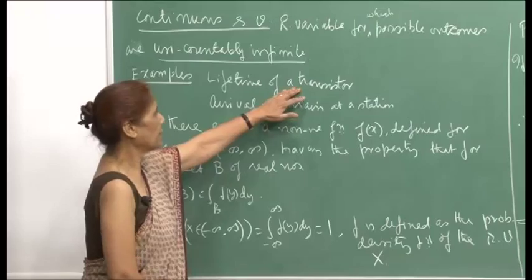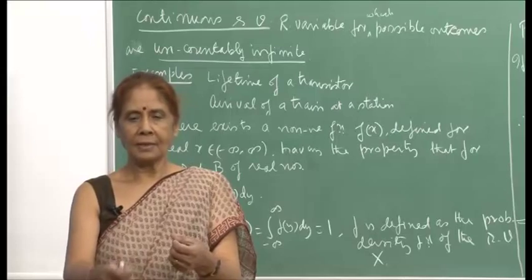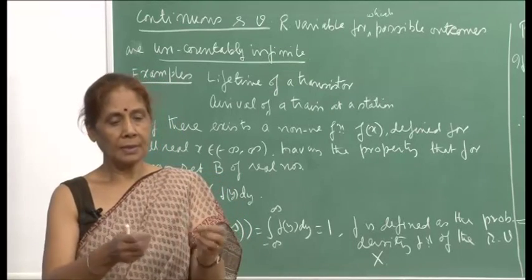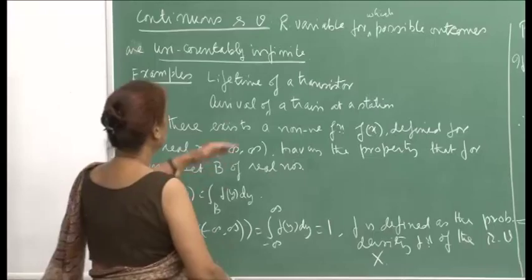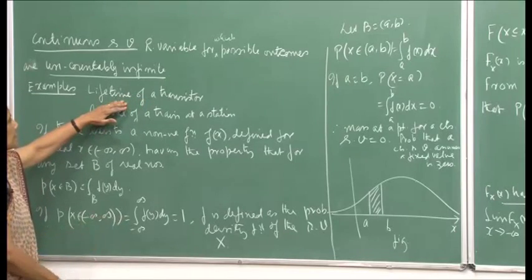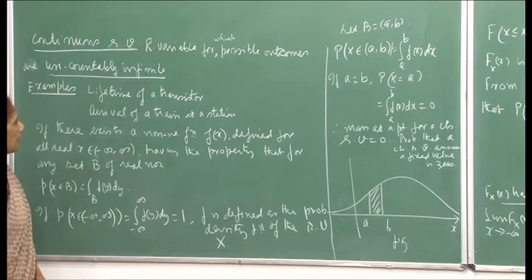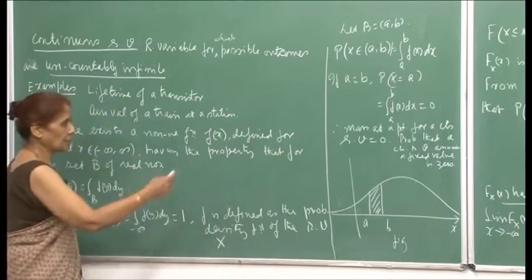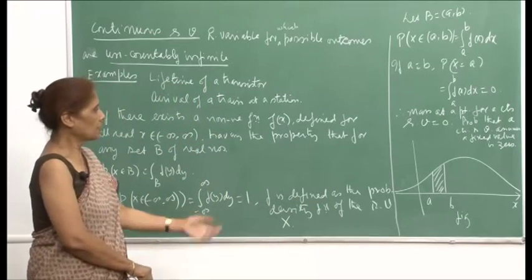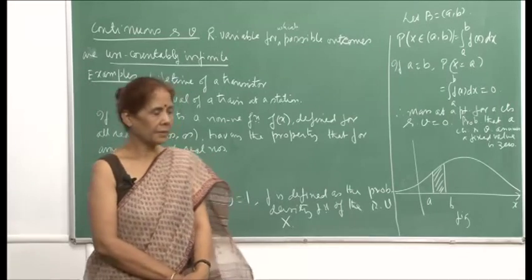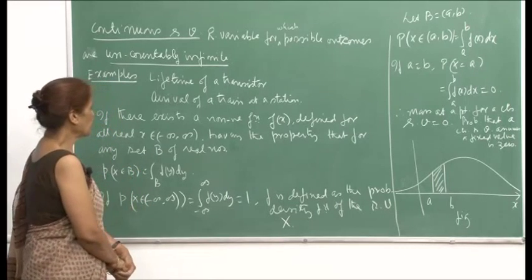Examples are: the lifetime of a transistor — you might say you have a finite clock and can say it failed at a specific time, but as fine as you make your counting system, you can treat this as uncountably infinite. Another example is the arrival of a train at a station. One can go on adding to this list.